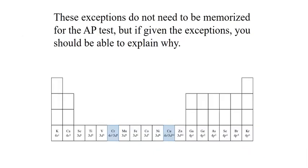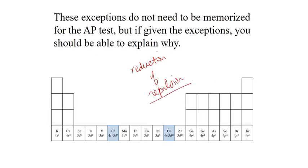These exceptions do not need to be memorized for the AP test. But if given exceptions, you should be able to explain them. If they give you any exception, be prepared to explain it in terms of a reduction of repulsion. The probability of getting some strange configuration is a product of there being less repulsion in the atom.